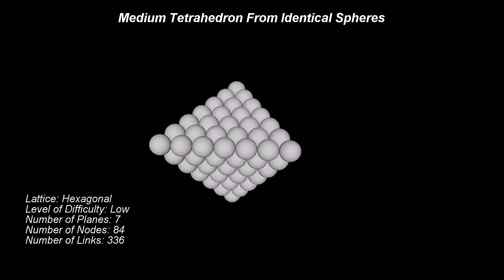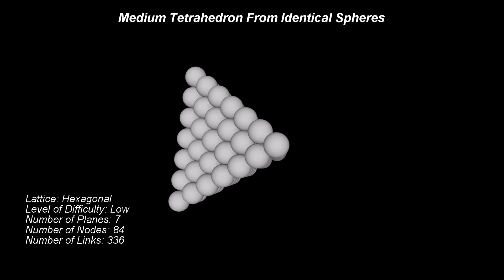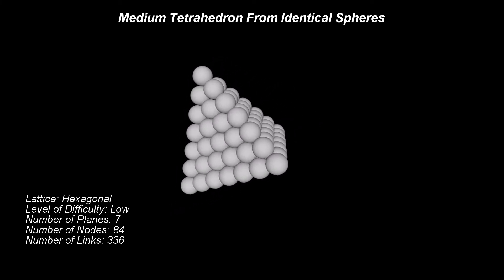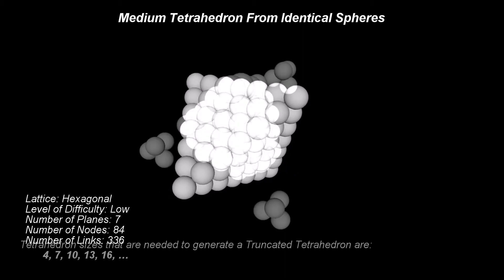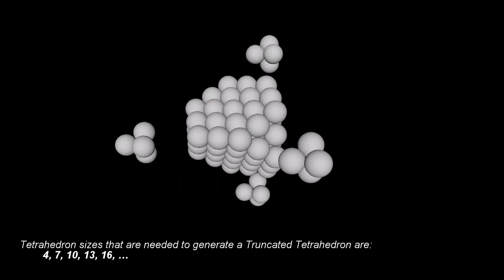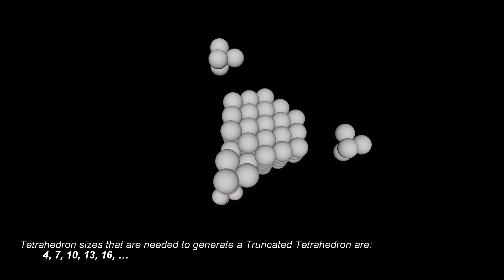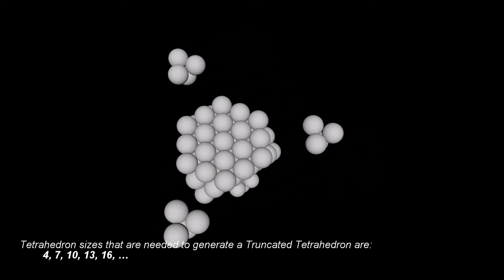This process works on any tetrahedron with the edges divisible in three equal sizes. This requires the edge of the tetrahedron to have a well-defined number of spheres. This number shall be one of the following: 4, 7, 10, 13, and so on.